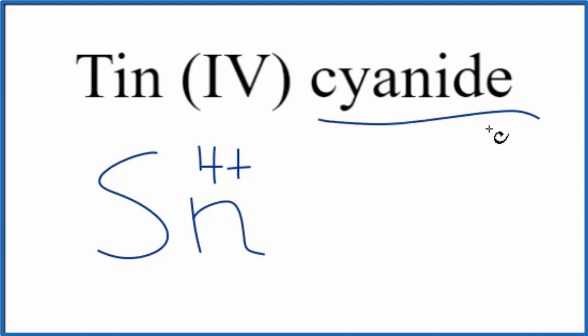For the cyanide, you won't find that on the periodic table. You need to either memorize that cyanide is CN, carbon and nitrogen, with a 1- ionic charge, or, if you're allowed, you could look this up on a table of polyatomic ions.